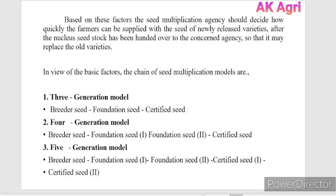In view of these basic factors, the chain of seed multiplication models has three main types. The first is the three generation model, consisting of breeder seed, foundation seed, and certified seed production. The second is the four generation model: breeder seed, foundation seed stage one, foundation seed stage two, and certified seed. The third is the five generation model: breeder seed, foundation seed stage one, foundation seed stage two, certified seed stage one, and certified seed stage two.